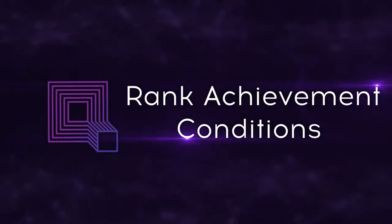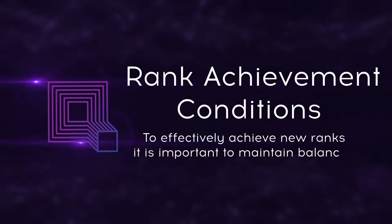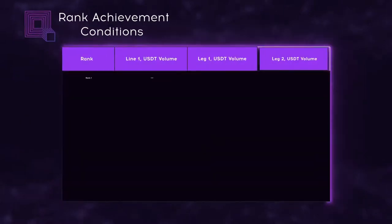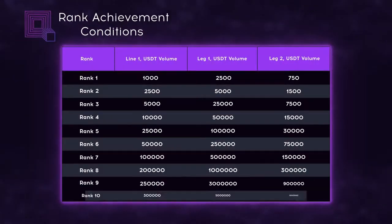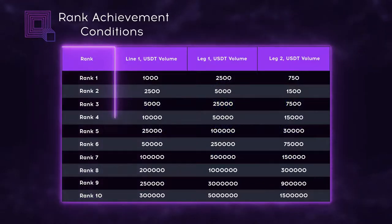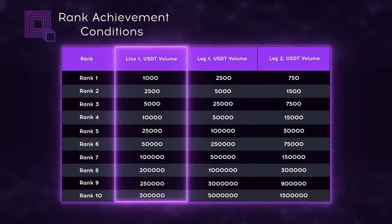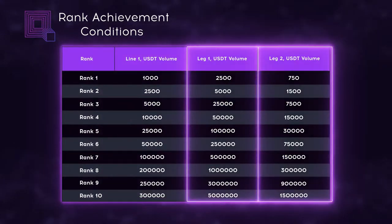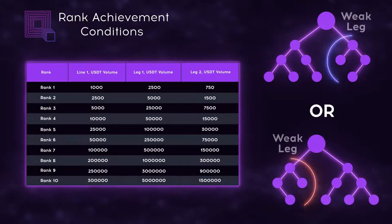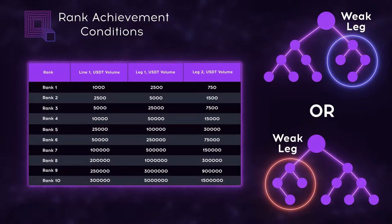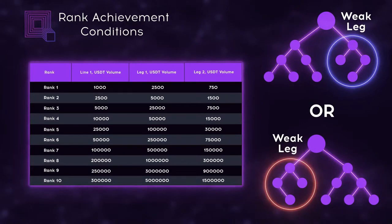Let's take a look at rank achievement conditions. To effectively and quickly achieve new ranks, it is important to maintain a balanced proportion for the binary legs. Binary proportion is based on USDT volume of your direct partners, excluding sponsor's USDT volume, whereas the biggest USDT volume of the binary leg can be both in your left or your right binary legs.